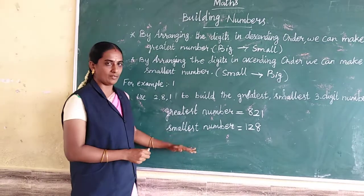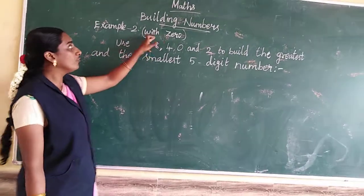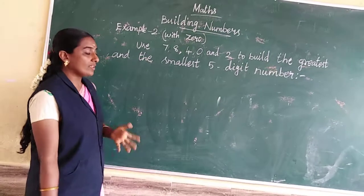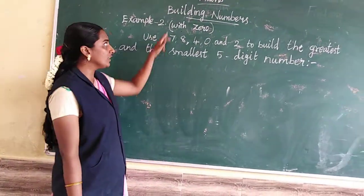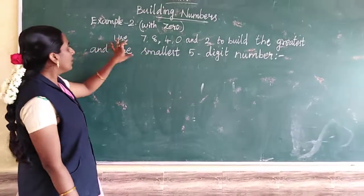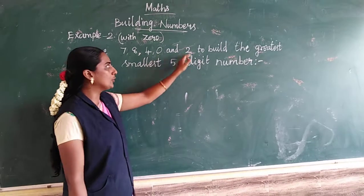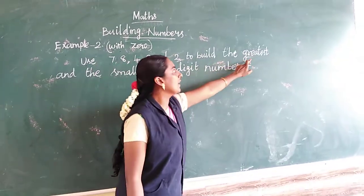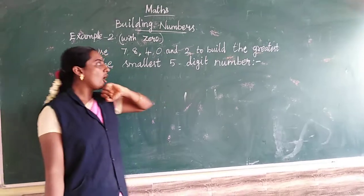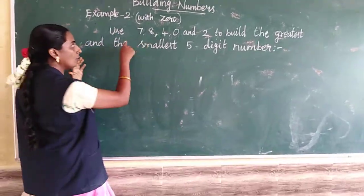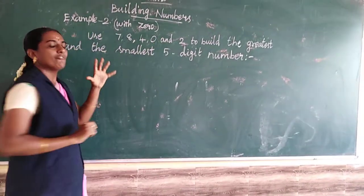Greatest and smallest number done. Next example with 0. In the previous sum we had only a 3-digit number. Now we are using 0. Use 7, 8, 4, 0, and 2 to build the greatest and smallest 5-digit number. How many digits? 5 digits — count: 1, 2, 3, 4, 5.